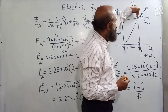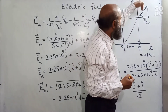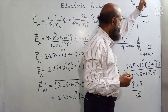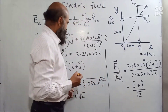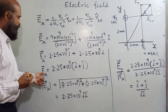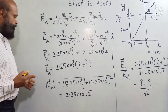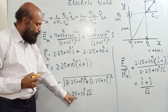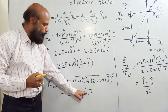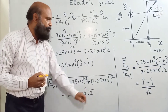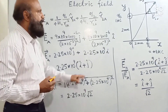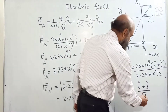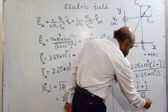This is the direction of the resultant electric field intensity. The magnitude of the electric field at A is 2.25×10⁹ × √2, and the direction is given by the unit vector along OA.